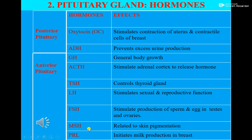MSH — melanocyte stimulating hormone — in other mammals is secreted from the middle lobe of the pituitary gland, but in humans it is secreted from the smallest part and is related to skin pigmentation. Prolactin (PRL) is secreted from the anterior pituitary. It initiates milk production in the breast and is also helpful in the growth of lactating ducts to secrete more milk to feed the young baby.